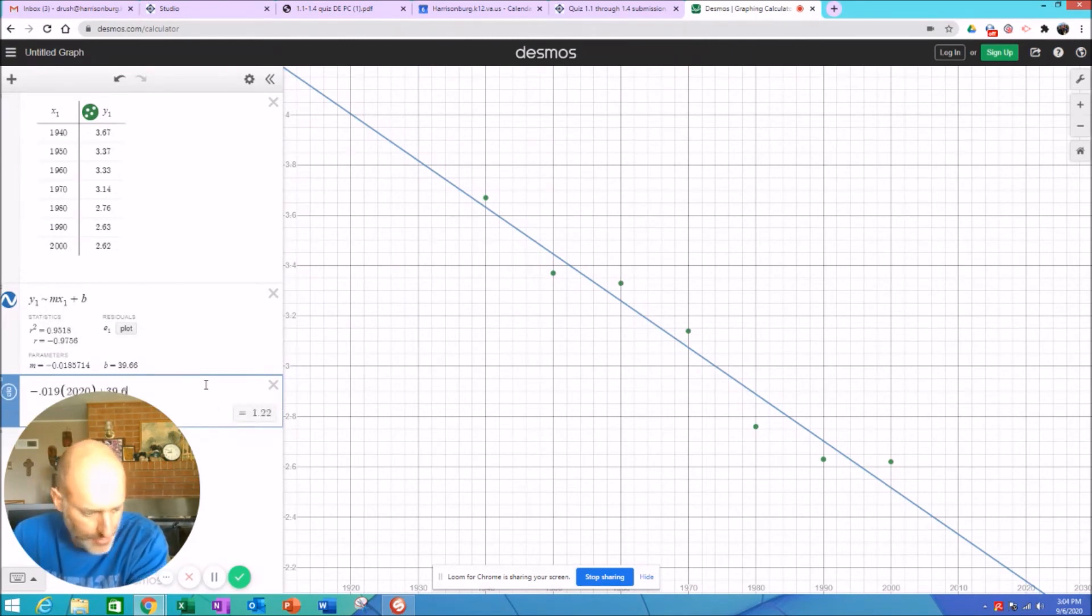Part c asks us to find the correlation coefficient. And what does it tell you? Correlation coefficient is this r value here. Remember, if it's really close to 1 or really close to negative 1, that it is a pretty close, tight correlation. And if it's close to 0, then it'd be really scattered. So if you notice, all these points that we have right here are fairly close to this blue line. So it's a pretty tight correlation. 0.97 or negative 0.97 is pretty tight. And the negative just means we have a negative correlation, a negative slope with it.